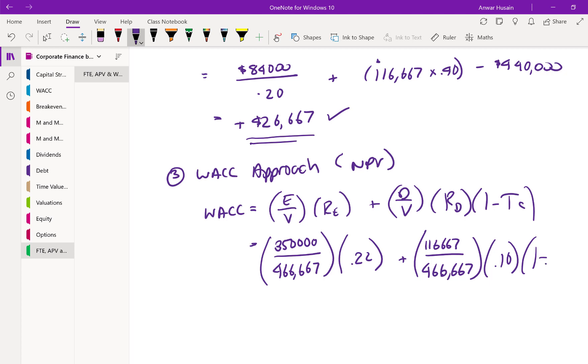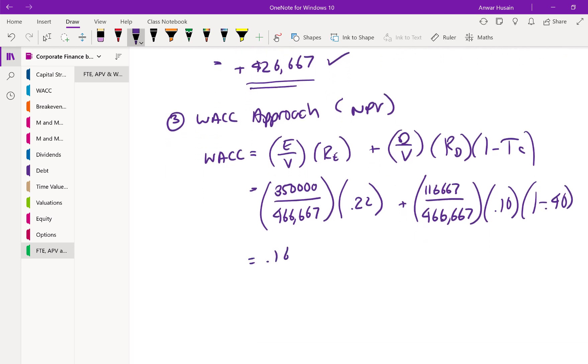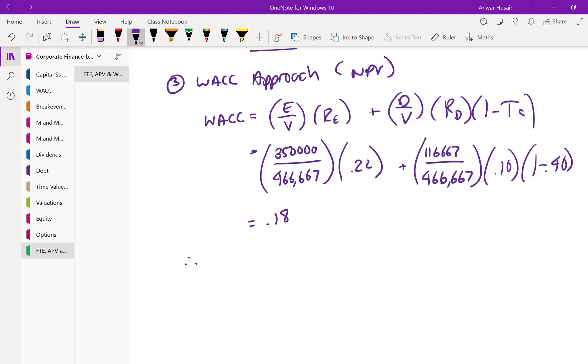Cost of debt was given as 10. And 1 minus the tax rate was 1 minus 40%. So this works out to 18%. Now, it's a simple calculation. Therefore, the weighted average cost of capital is going to be the unlevered cash flow, since it's a perpetuity divided by the WACC minus the investment.